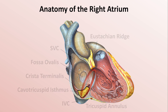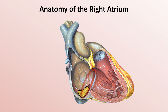In the most common form of flutter, the reentrant circuit travels counterclockwise as viewed from the front of the patient. The wavefront of depolarization descends the lateral wall, passes slowly through the cava tricuspid isthmus, and then rapidly back up the intraatrial septum, encircling the right atrium posterior to the tricuspid annulus.